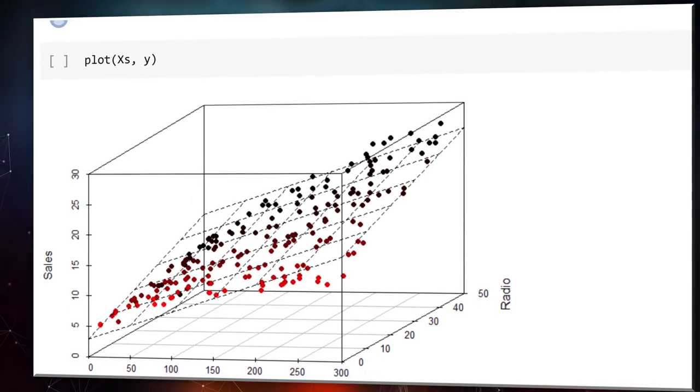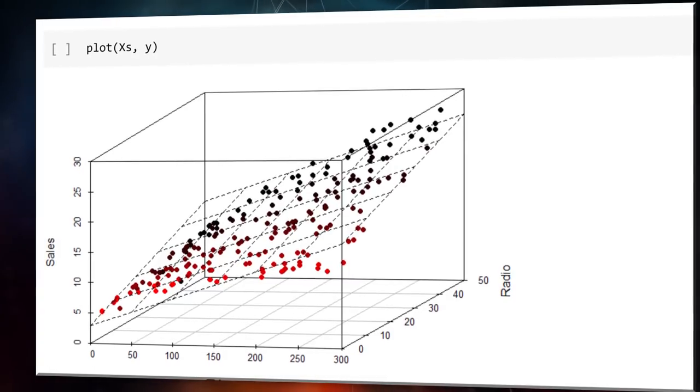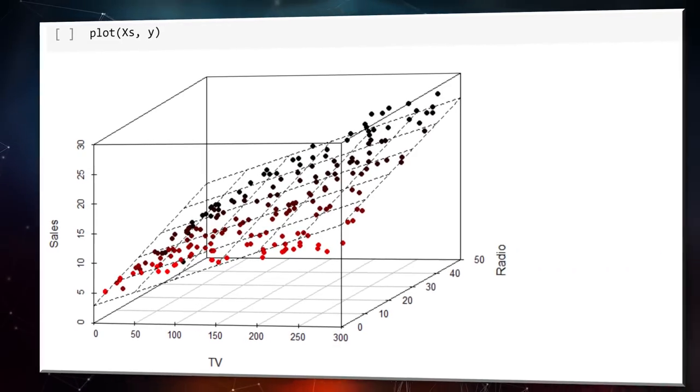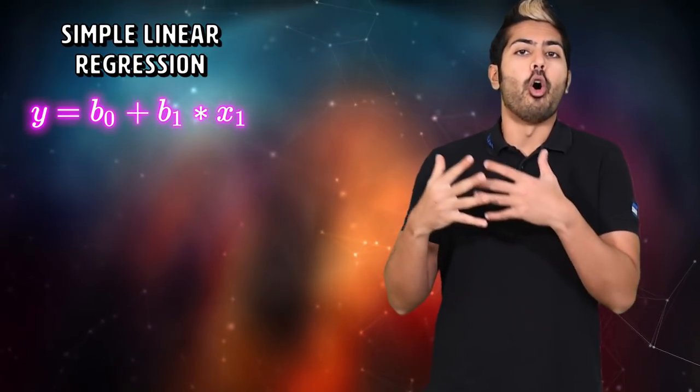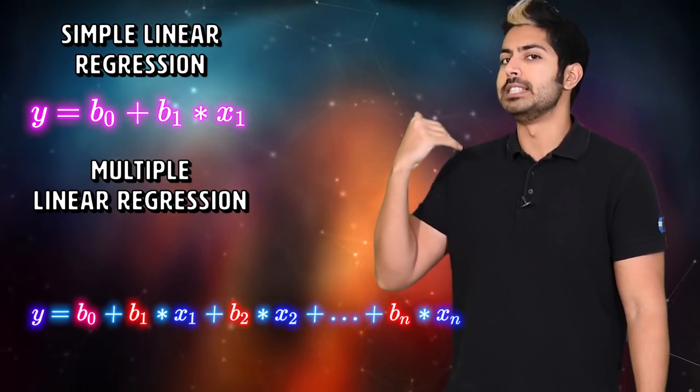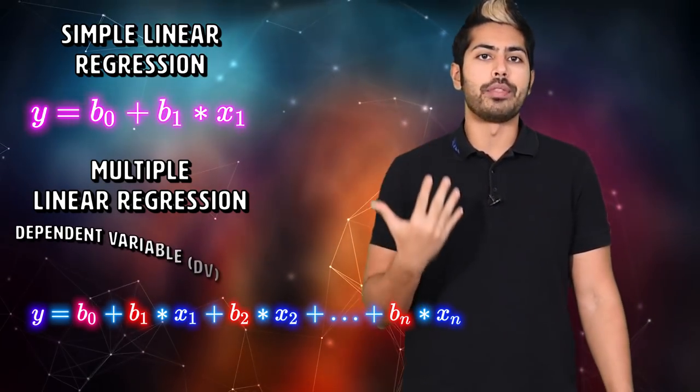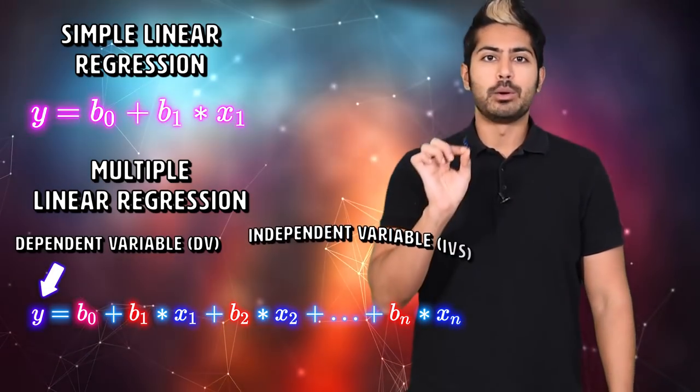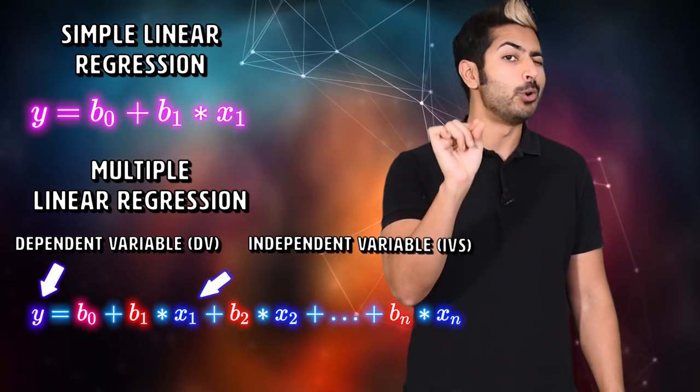If we again use gradient descent to find the equation that best fits our data, we'll receive a model we can interpret, specifically the coefficients in the equation. We can correlate each learned coefficient with a different feature. If all the other predictors are held constant and we change any of these values, we can tell what the corresponding increase in the amount of sales would be.